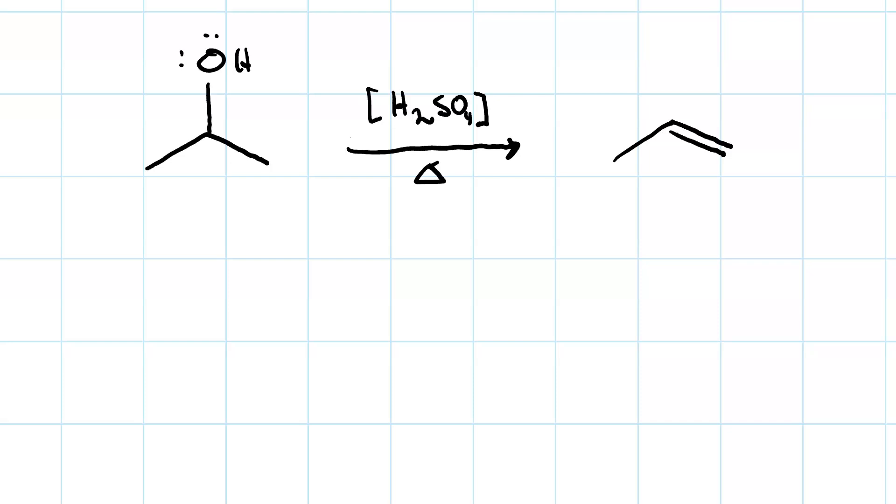However, hydroxide is a terrible leaving group. So we need to do a proton transfer first to turn it into water. Now even though our reagent is concentrated sulfuric acid, there is enough hydronium or enough water present to mean that hydronium is going to be the actual molecule that supplies the proton. So here is our first step. Two curved arrows for proton transfer.